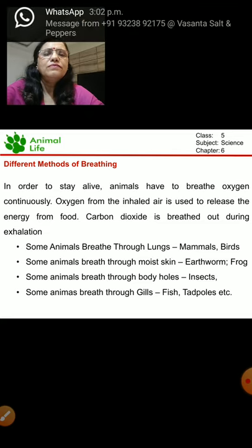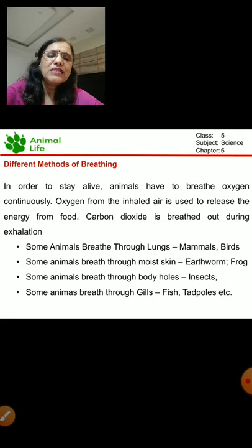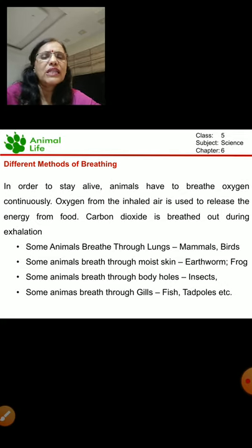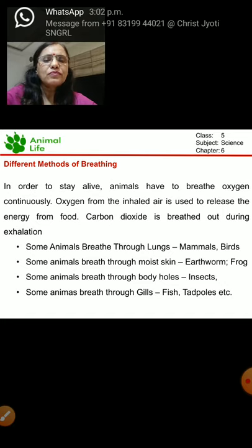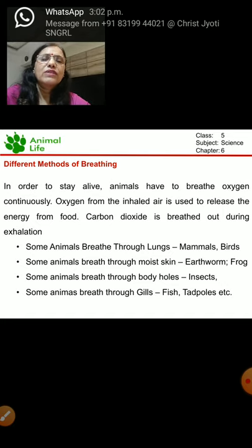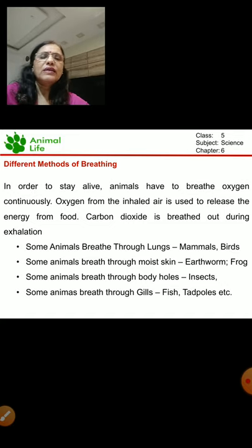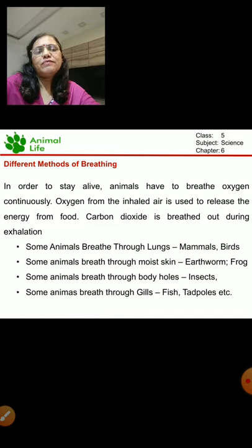Some animals breathe through lungs, like mammals and birds. Some animals breathe through moist skin, like earthworms and frogs. Some animals breathe through body holes called spiracles — examples are insects. And some animals breathe through gills — examples are fish and tadpoles.